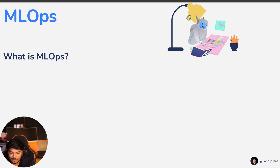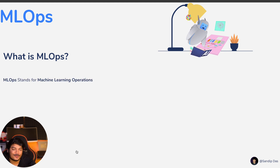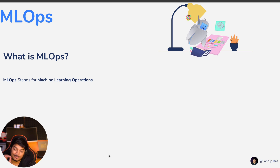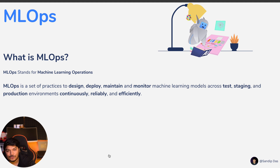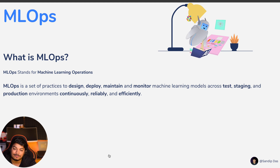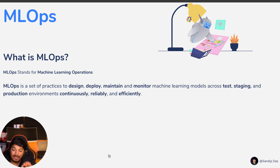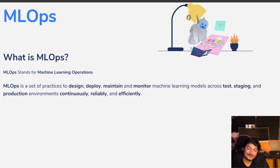Let's first understand what MLOps is. We all know that MLOps stands for Machine Learning Operations, but if you go to an interview and just say that, it's not enough. You have to explain it clearly. MLOps is a set of practices to design, deploy, maintain, and monitor machine learning models across test, staging, and production environments — consistently, reliably, and efficiently.